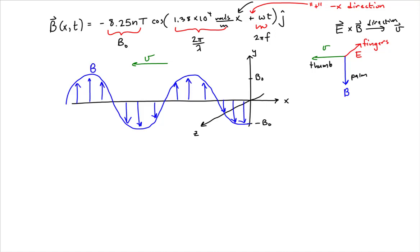This comes from the version of the right-hand rule where we put our fingers in the direction of the first vector, which is the electric field, curl our fingers in the direction of the second vector, which is the magnetic field, stick our thumb out, and that's the direction of the third vector — the velocity — the cross product of E cross B. So we now know that at time t equals 0, x equals 0, the electric field has a negative displacement along the z-axis. So I'll put negative E-naught here, and then positive E-naught here.